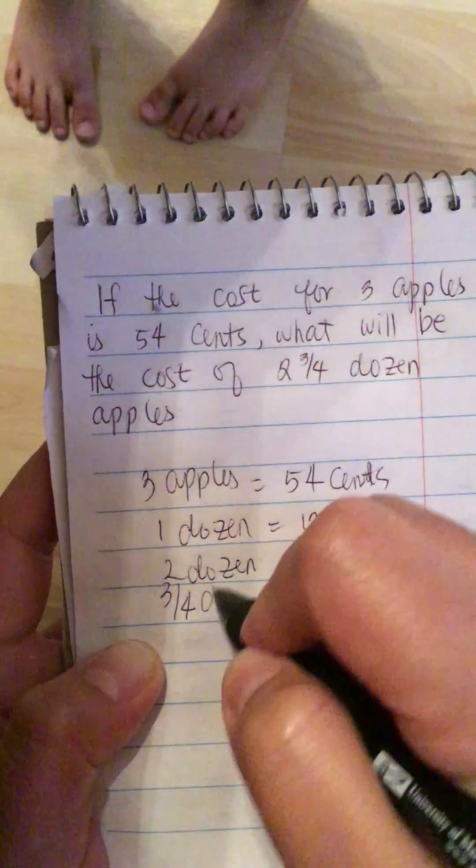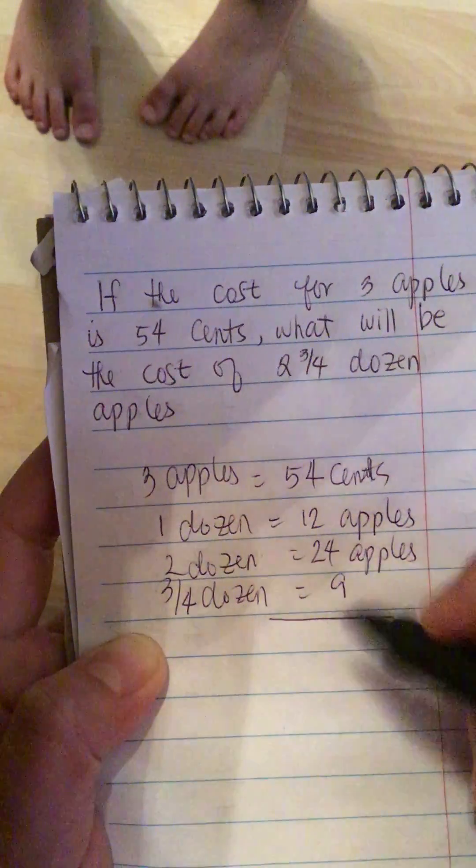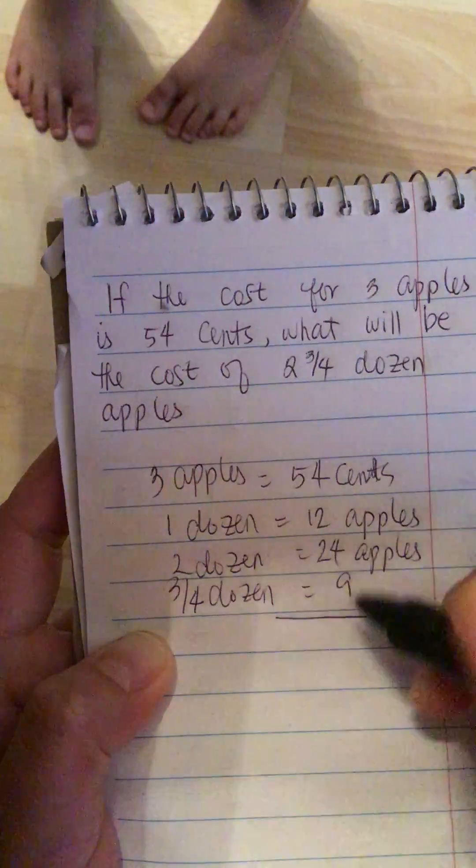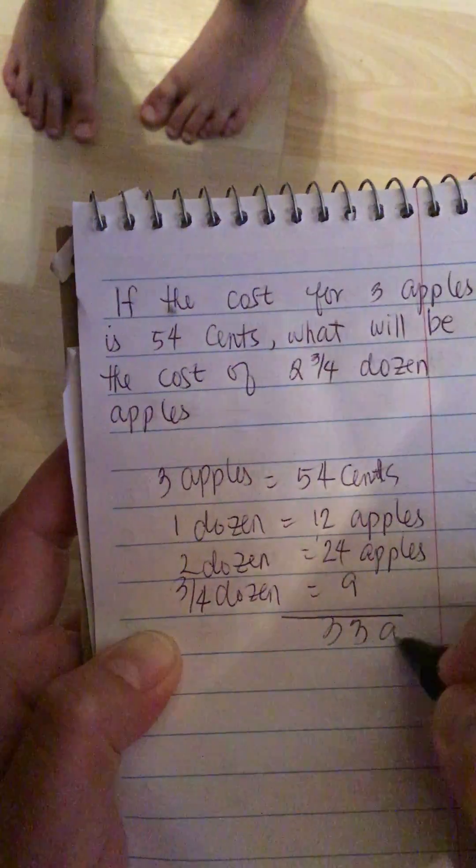So if we add this, 24 plus 9 is 33 apples.